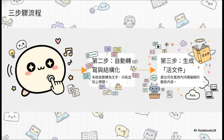操作流程很简单：第一步，长按开始说话，把想法录下来就好。第二步，系统会自动把声音变成文字，而且超聪明，不只是单纯逐字稿，它会帮你分段、下标题，整个结构都抓出来。最后变成一份所谓的「活文件」——不是存档就不能动的死档案，而是可以不断修改、优化的动态内容。